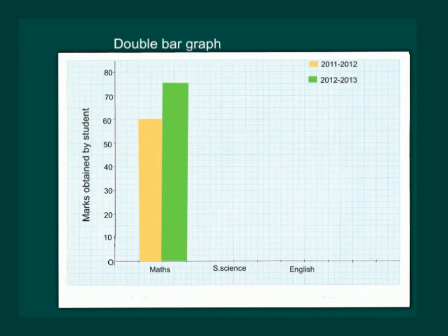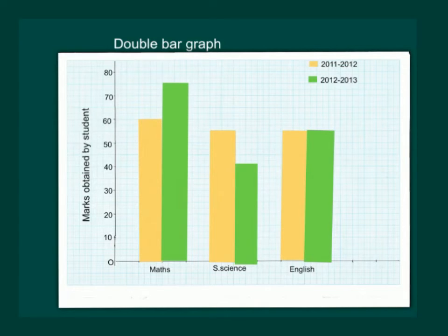From the graph, we can see that in Maths in the year 2011-2012, the child scored 60% marks. While in the year 2012-2013, he scored 75% marks. Similarly, he scored 55% marks in 2011-2012. But he could only score 40% marks in 2012-2013 in Social Sciences. While in English, both the years 2011-2012 and 2012-2013, he scored same marks i.e. 55% marks.